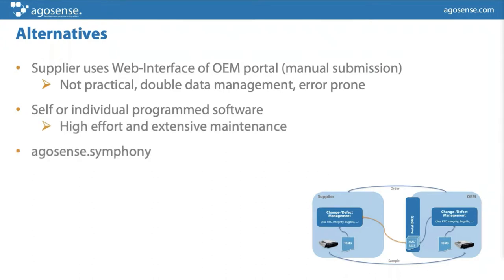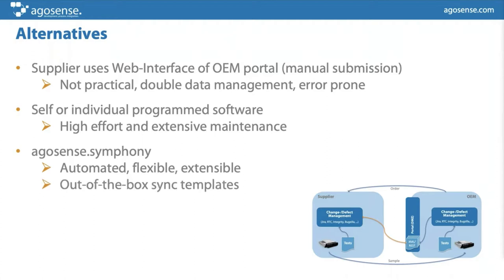One of the solutions — and we believe it's probably the best choice — is a system like Argosense Symphony, where everything can be automated, flexibly adjusted, and is extensible in terms of clustering, load balancing, failover, and support for new projects and customer integrations. With our template-based system, data exchange can be quickly introduced and implemented to get up and running.